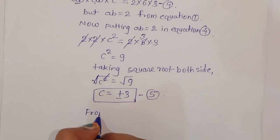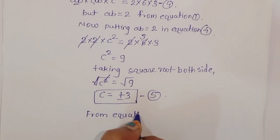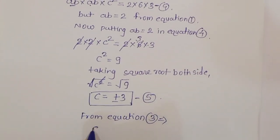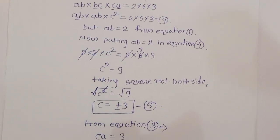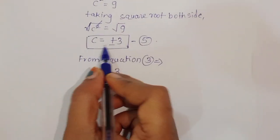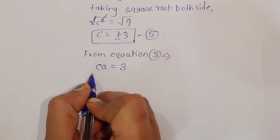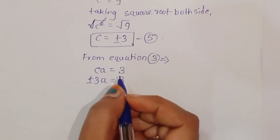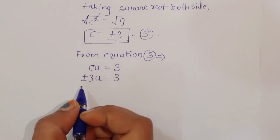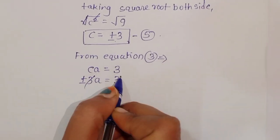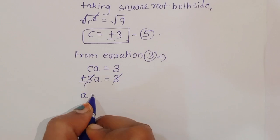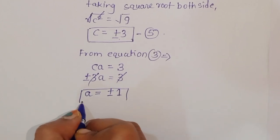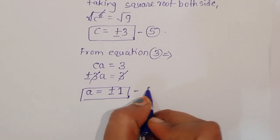From equation 3, CA is equal to 3. The value of C is plus or minus 3, so plus or minus 3 times A equals 3. Dividing both sides by plus or minus 3, A is equal to plus or minus 1. This is equation 6.